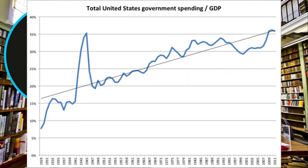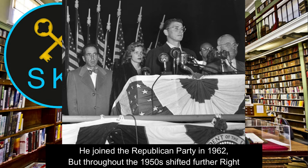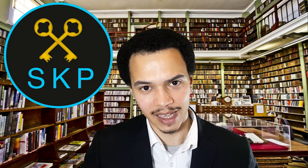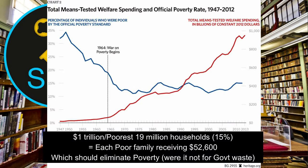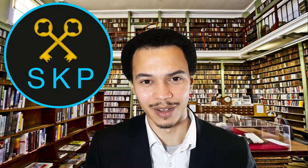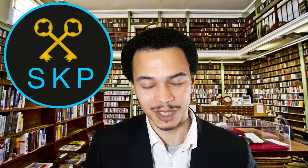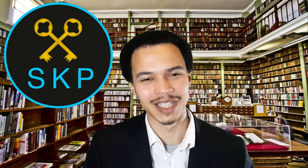In that speech he also addressed the growing size of the federal government and the welfare state. He famously said, "I didn't leave the Democratic Party — the Democratic Party left me," representing the leftward shift the party had taken in the 1950s and '60s away from small government values. He railed against programs like the Great Society pushed by JFK and LBJ, and against what he called "welfare bums," famously saying he was in favor of sending them back to work. He didn't mince his words.